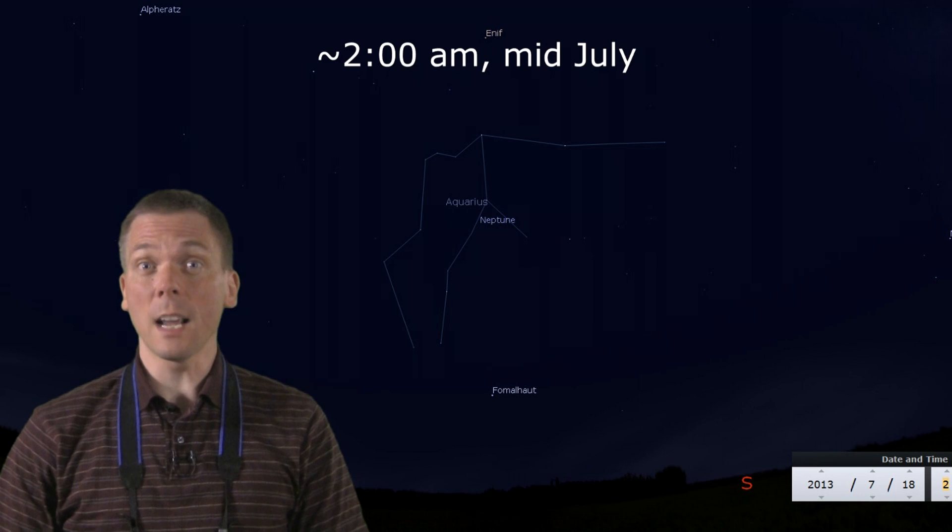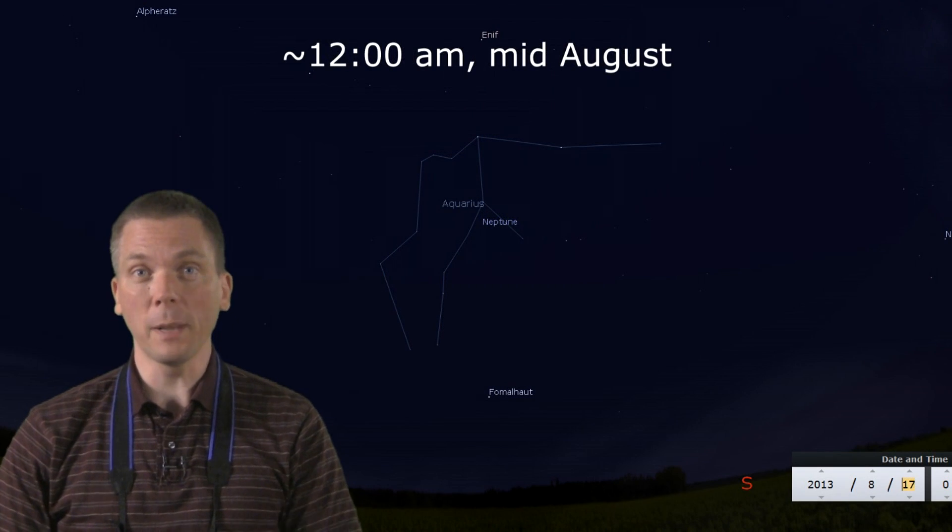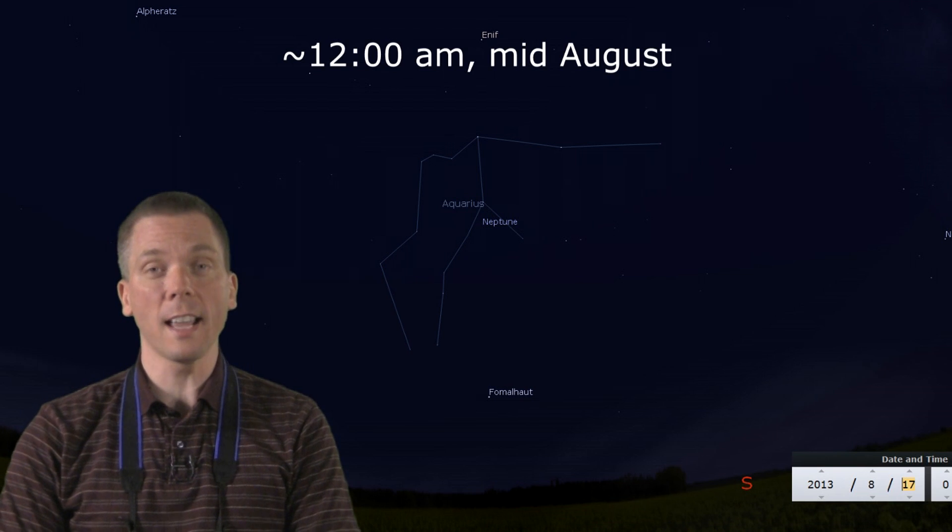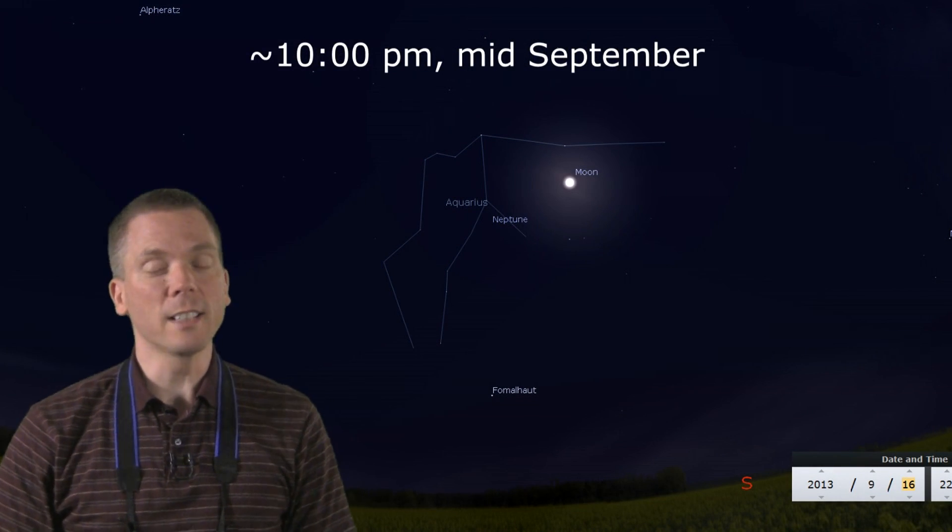At this time of year, you'll need to stay up pretty late, at least till 1 or 2 o'clock in the morning. But no worries, the planet remains in the same general part of the sky until the end of the year, so you can find it earlier in the evening, later in summer or autumn.